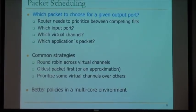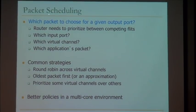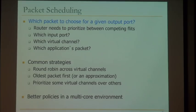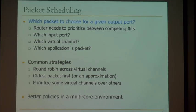Focusing on packet scheduling: the problem is which packet to choose for a given output port. The router must prioritize between competing flits or packets. Common strategies include round-robin across virtual channels — simple but application-unaware — and age-based or oldest-packet-first scheduling, which is more complex. You can also prioritize certain virtual channels to provide application-level priority support. These policies don't take application characteristics into account, which can lead to suboptimal performance.